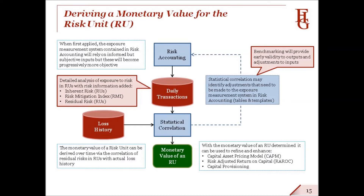As we previously commented, the adoption of a new risk metric for risk reporting — the risk unit — will challenge the senses of many of us. One aspect that will perhaps enhance the RU's attractiveness is the prospect that through the statistical correlation of exposures to risk in RUs and actual loss history, we should be able to derive the monetary value of an RU over time. This opens up many other possibilities for risk reporting in the future, some of which we'll discuss on the next slides.